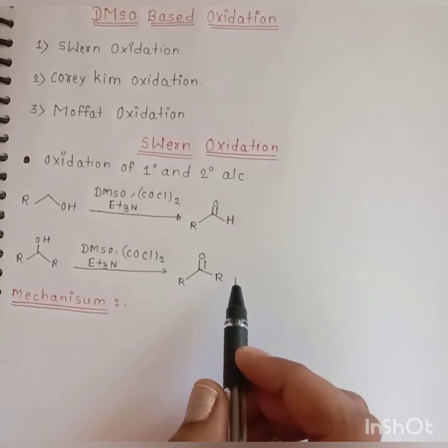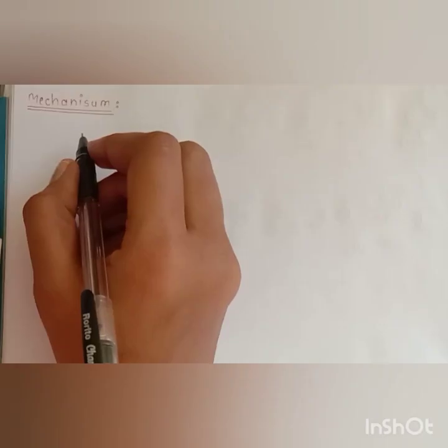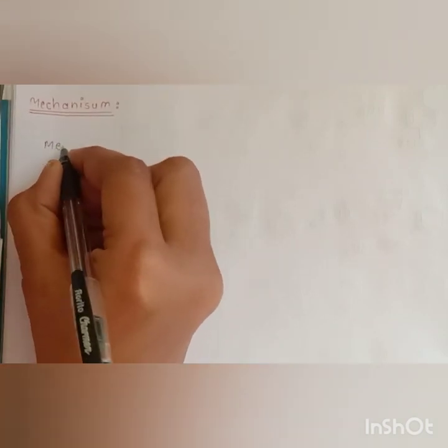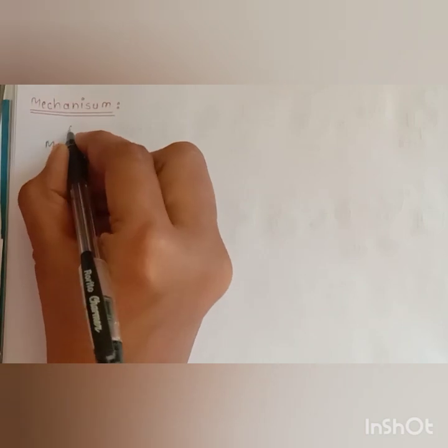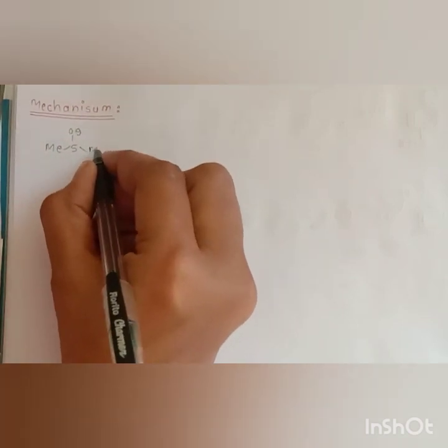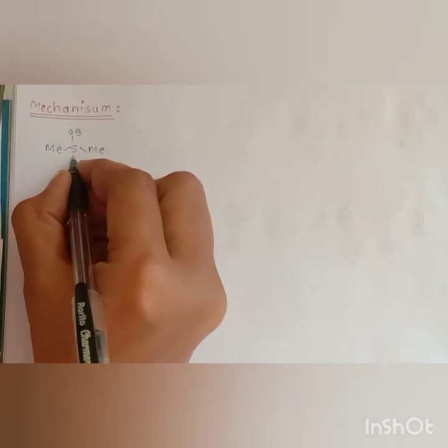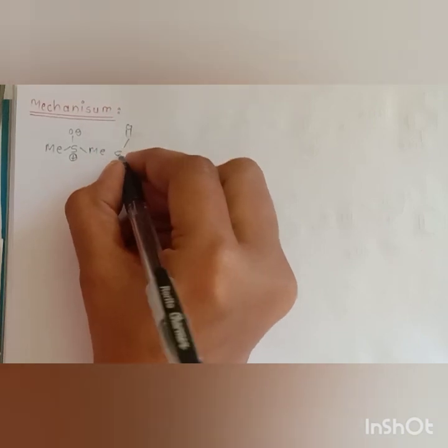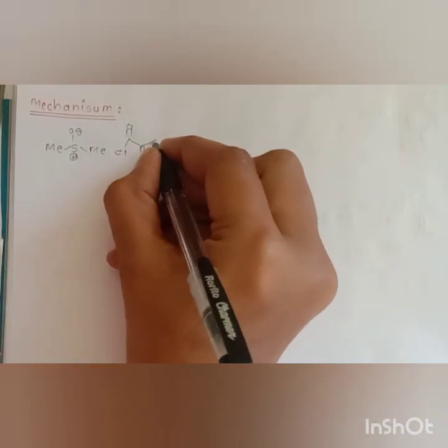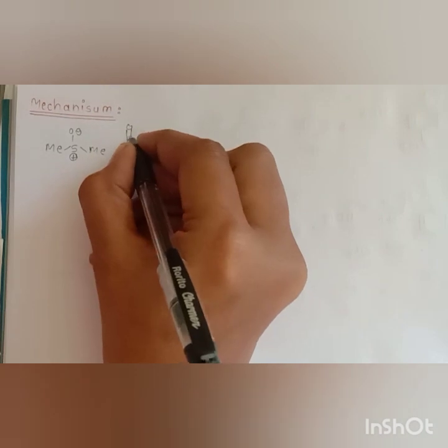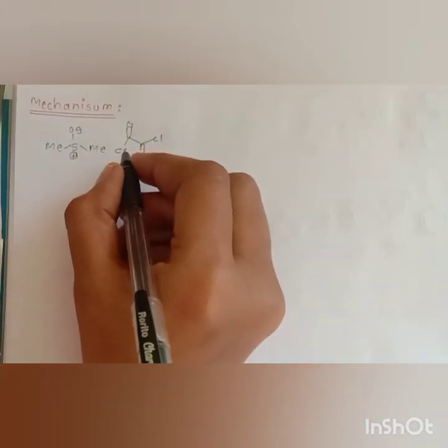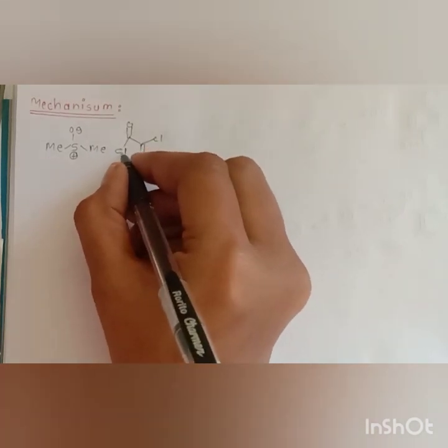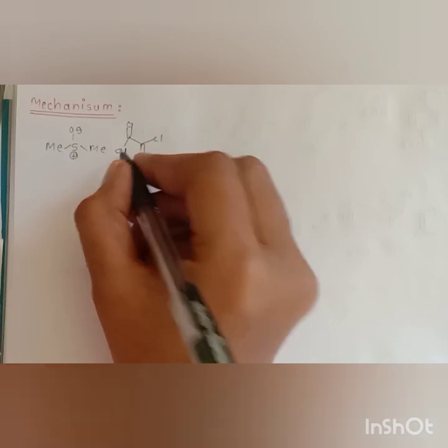Now let's discuss the mechanism. In the first step, the DMSO dimethyl sulfoxide attacks on this electrophilic carbonyl because of the negative inductive effect imparting chlorine atom.